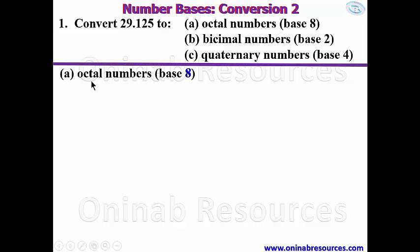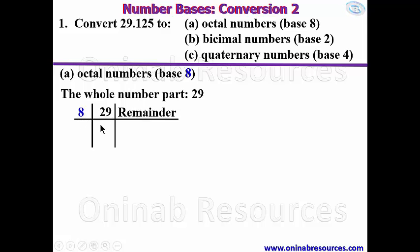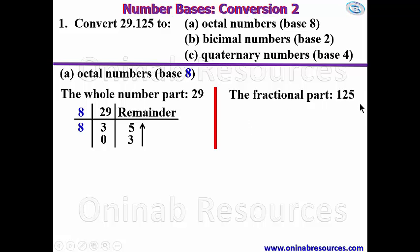We start with part (a): octal numbers. We're going to convert this in two parts — the whole number part first, then the decimal fractional part. For the whole number part, we convert to base 8 by continuous division and taking the remainder. We have 29 in the number column and a remainder column. 29 divided by 8 gives 3 remainder 5 — since 8 times 3 is 24, and 24 plus 5 gives 29. Then 3 divided by 8 gives 0 remainder 3. Since the quotient is 0, we stop and read the remainders upward.